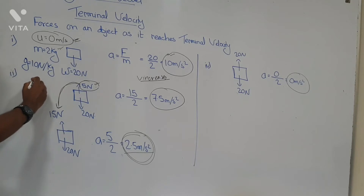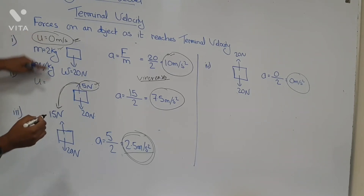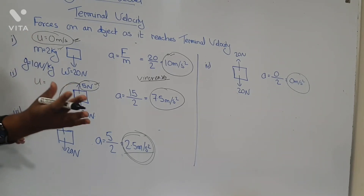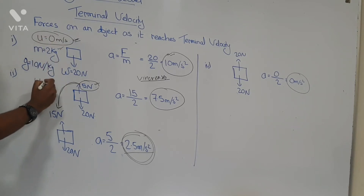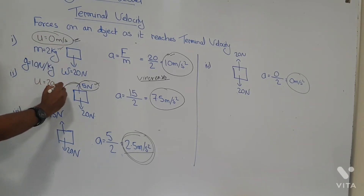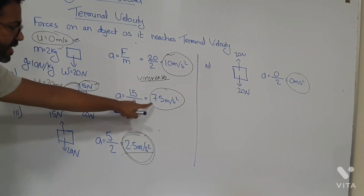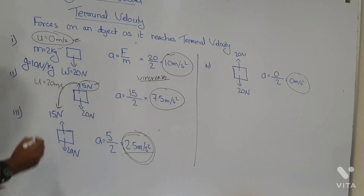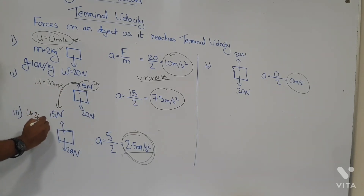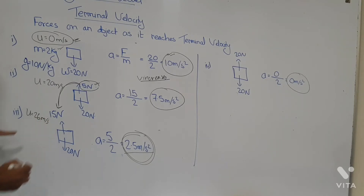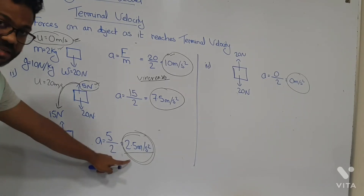But what happened to the velocity of the object? Initially the velocity was zero, then it increased. Let's take random values — say the velocity increased from 0 to 20 m/s, then because it was still accelerating it increased further, let's say to 26 m/s.